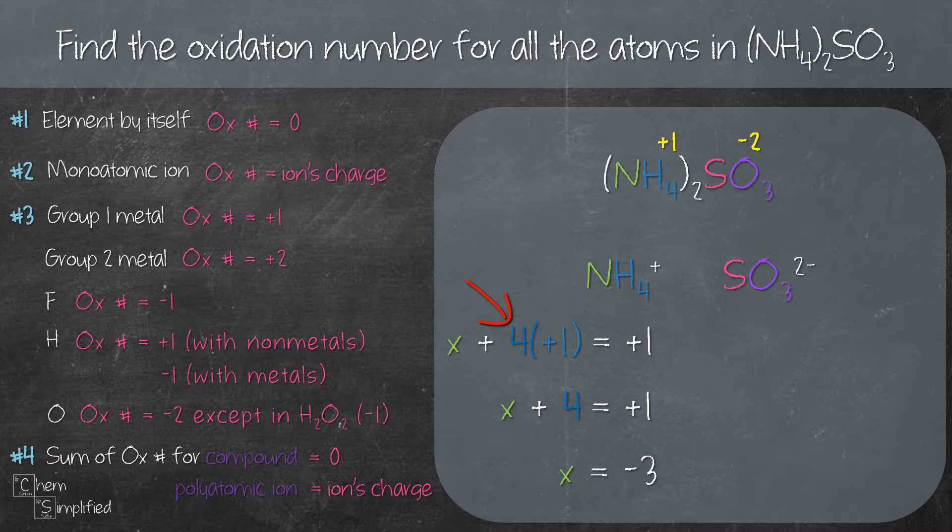The reason we multiply by 4 is because there are 4 hydrogen and the reason we multiply with positive 1 is because plus 1 is the oxidation number for hydrogen. So we have X plus 4 times plus 1. Now the whole thing is going to equal plus 1 because NH4+ has a charge of plus 1.